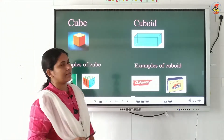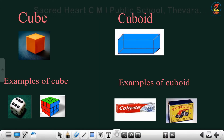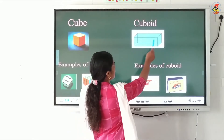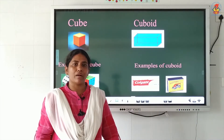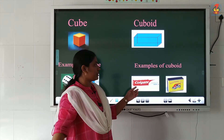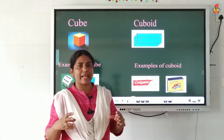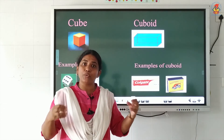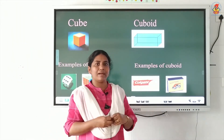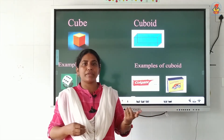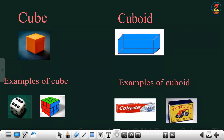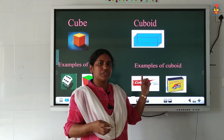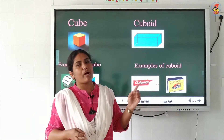The second solid shape or 3D shape we are going to study is cuboid. Children, what is a cuboid? You see this shape — this type of thing at your home. I show two examples here. The first one is the cover of a toothpaste. When we buy toothpaste, there is a cover, and its cover is in the shape of a cuboid. The second example is a matchbox. All of you — your parents — use it at home for lighting candles. Its shape is also a cuboid shape.